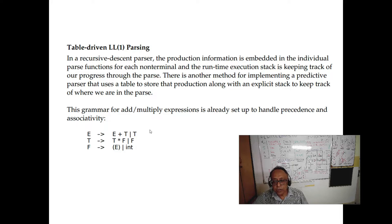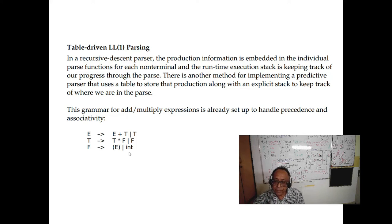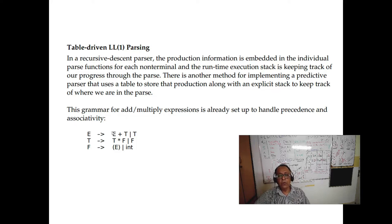But this grammar is not good for LL(1) parsing. Why? Because the problem is left recursion. On the left-hand side we have e, and on the right-hand side we also start with e; similarly t starts with t. Both these rules violate top-down parsing. The basic rule is first the grammar should be unambiguous — the grammar is unambiguous, no issue — but the grammar contains left recursion. Left recursion is absolutely a no-no for top-down parsing, so we have to convert it. However, this grammar is good for bottom-up parsing.